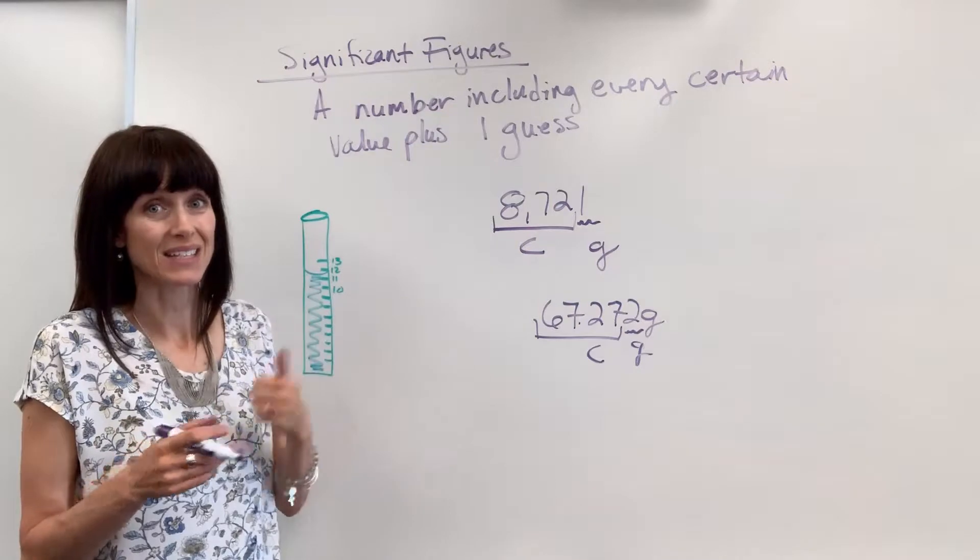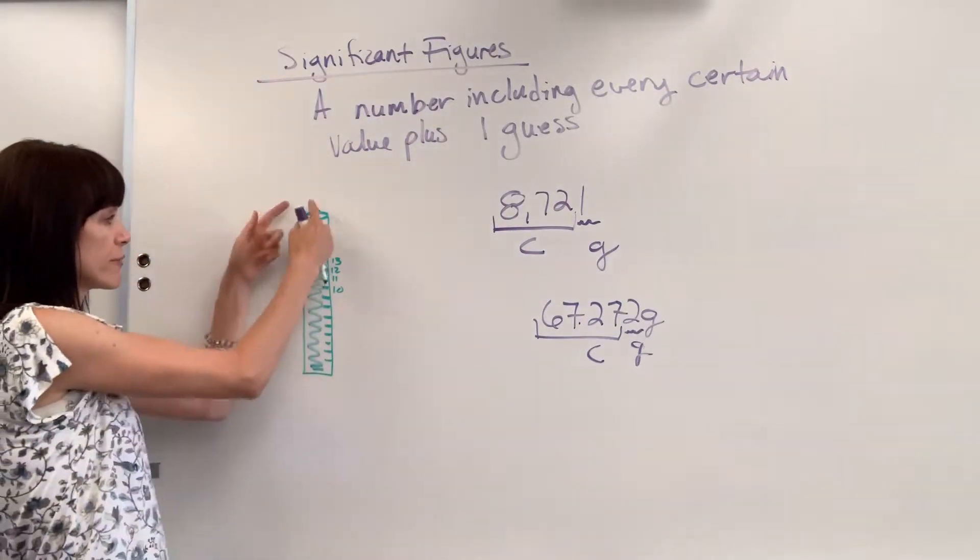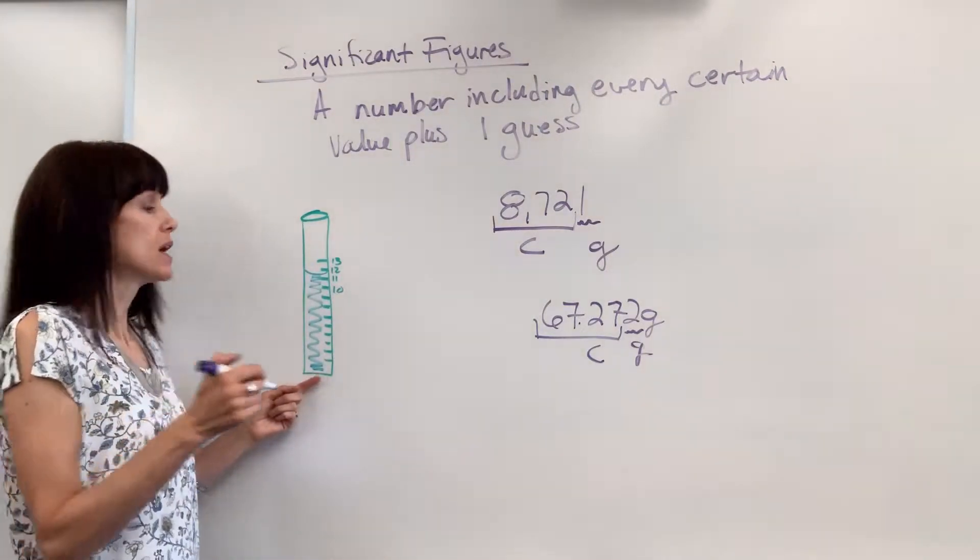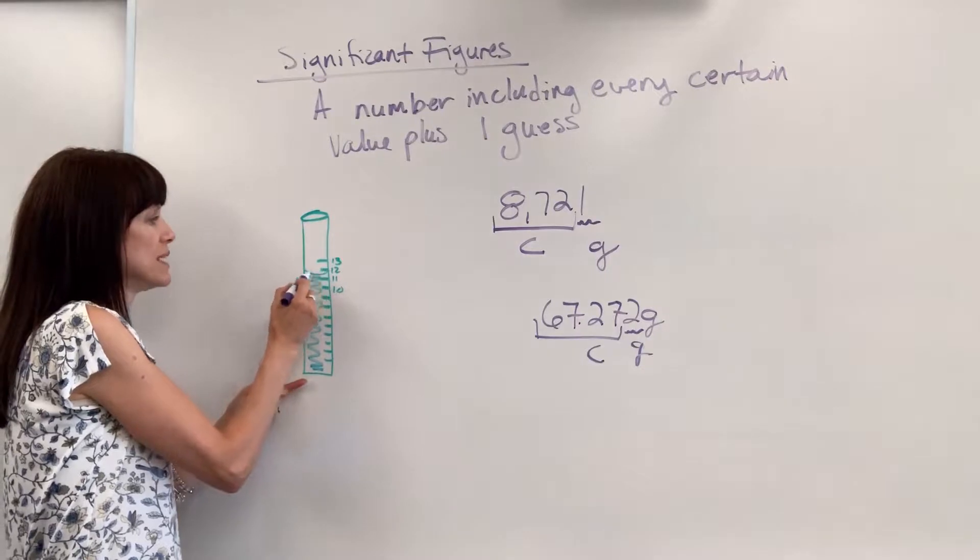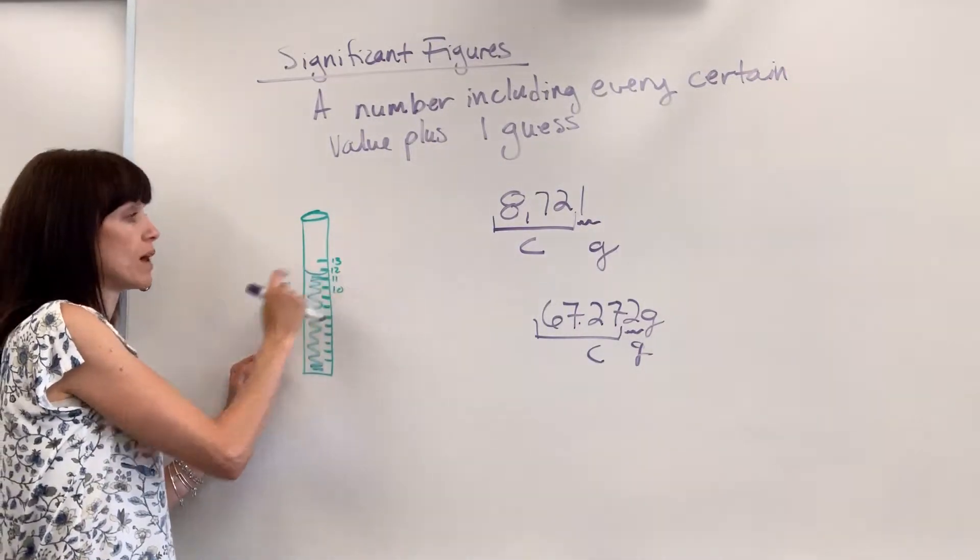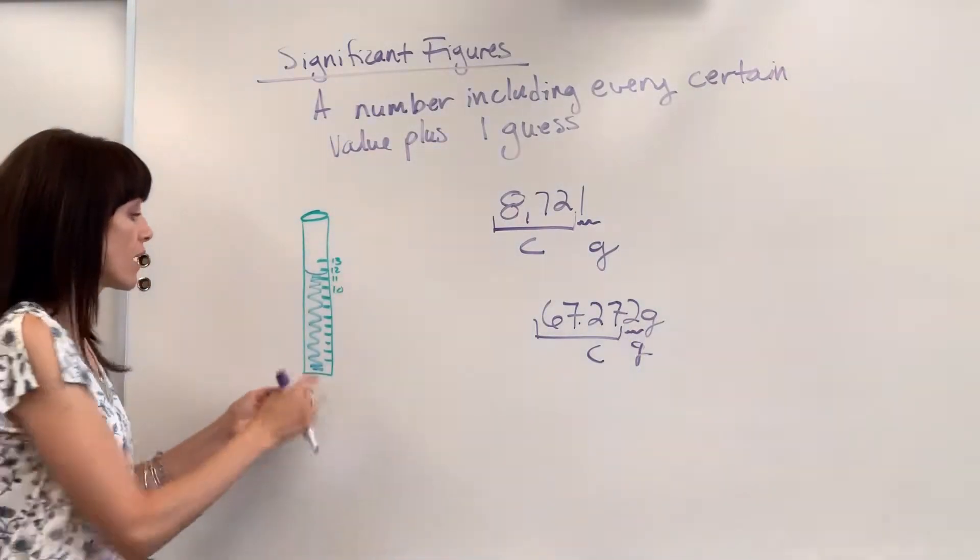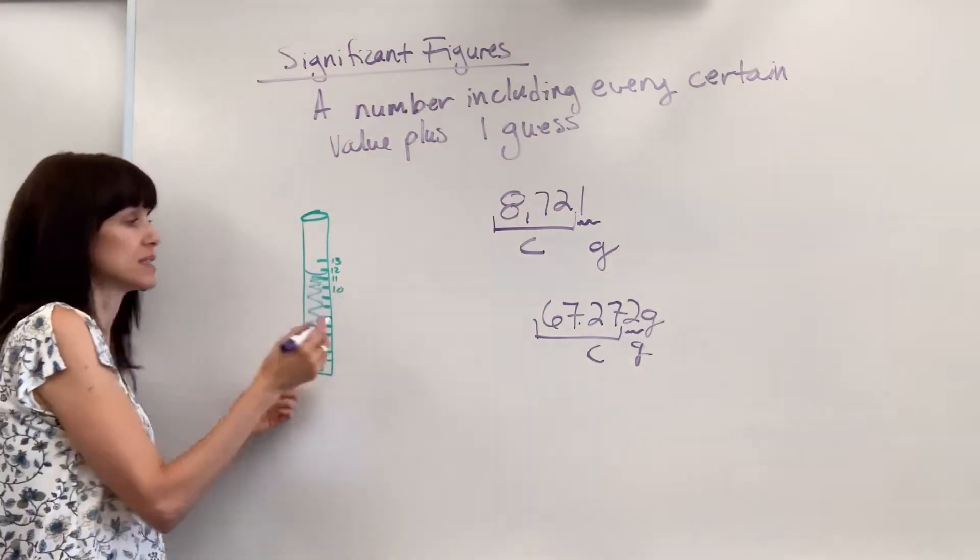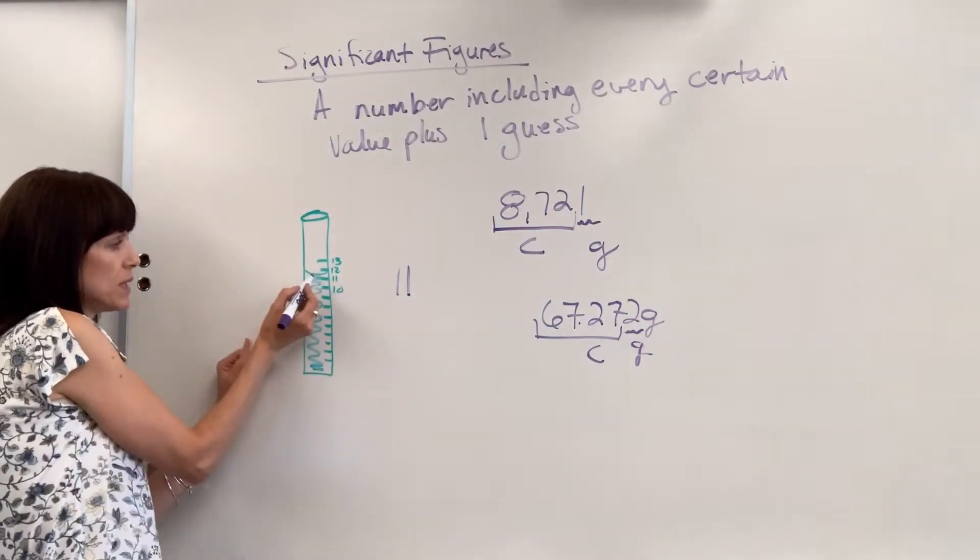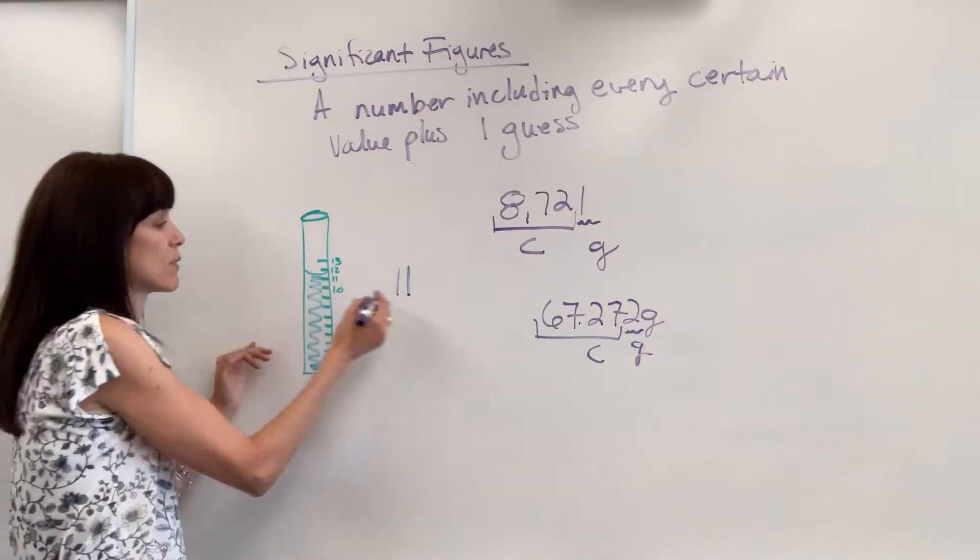Here's how you do a sig fig. I have my green graduated cylinder and the blue marker indicates water. You can see the meniscus is hitting between the 11 and 12 tick marks. I know with certainty there are at least 11 mils inside here. I'm positive, so I write down 11. The meniscus is in between, so I have to make a guess.